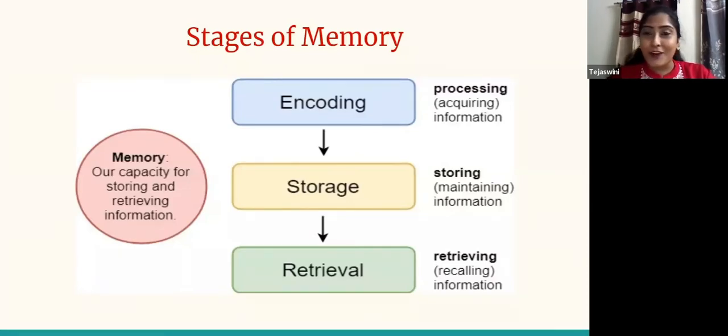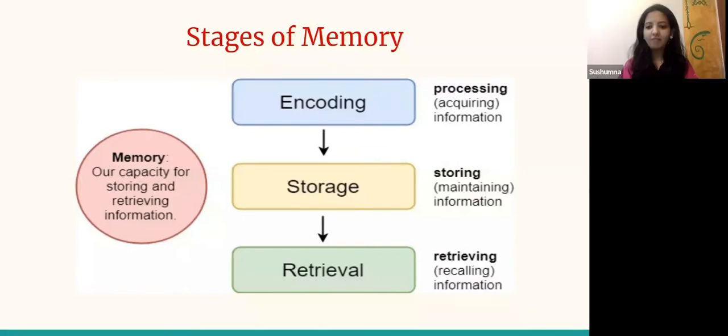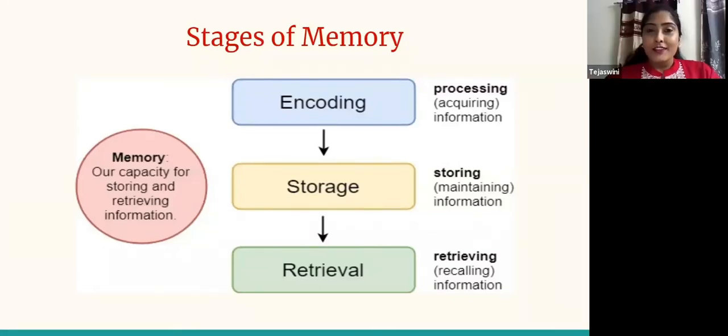I want you all to do one more guesswork. When we talk about memory failure, which of these three stages do you think contributes to the major memory failure? Is it absorption of information, saving it, or recalling it? It's quite a mixed one where we see between recall, storage, and retrieval.